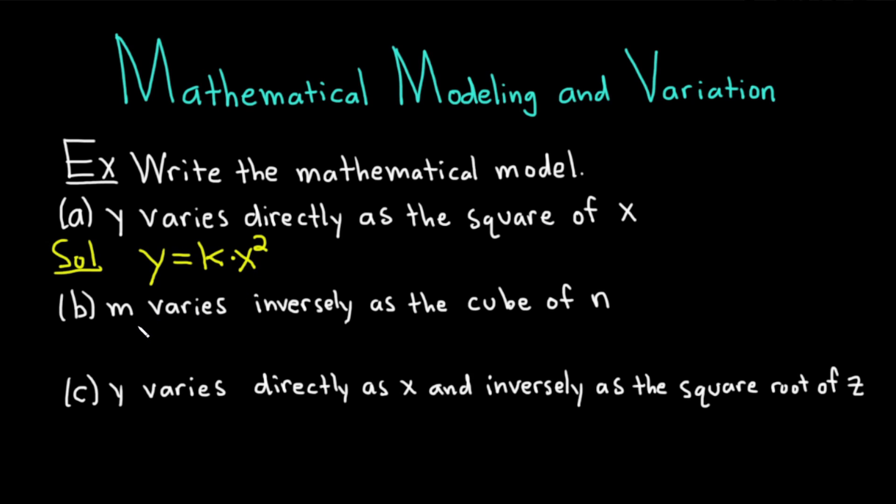Let's do part B. m varies inversely as the cube of n. Let's work through this one. It says m varies inversely. That means we're going to divide by whatever is here. So it'd be k over the cube of n, which is n cubed.